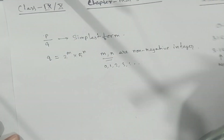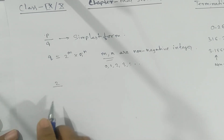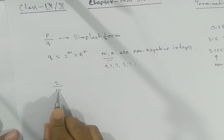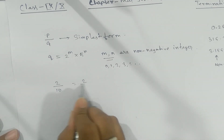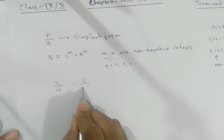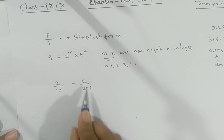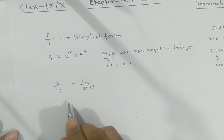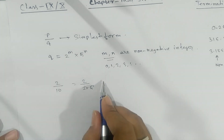For example, if we take 2 by 10 — look at the denominator: 10 can be written as 2 into 5. Here M is 1 and N is 1, which means it is a terminating decimal. So what will the value of this one be? It is 0.2.